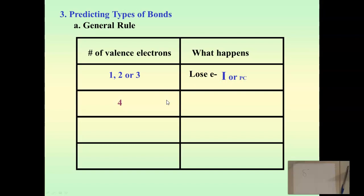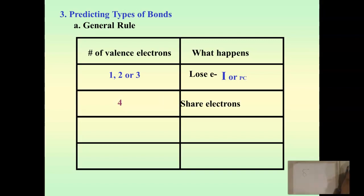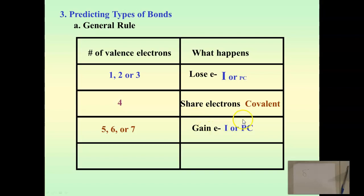If you've got four valence electrons, you're right in the middle — it's just as hard to gain four more as it is to lose four more. So these atoms will share electrons in either a polar covalent bond or a nonpolar covalent bond. If you have five, six, or seven valence electrons, you're close to an octet, so it's much easier for the element to gain electrons, either all the time — ionic — or part of the time — polar covalent.